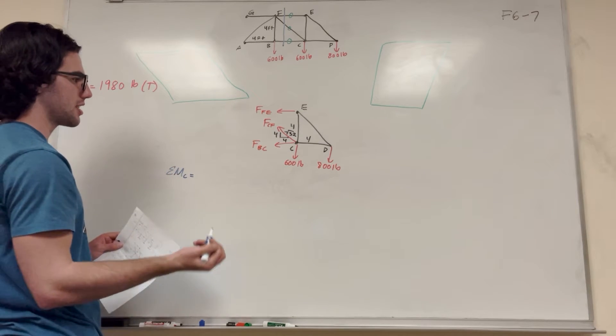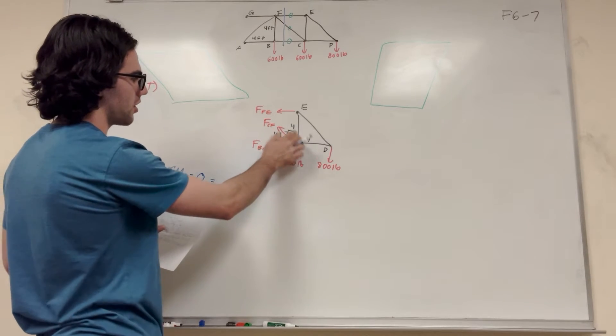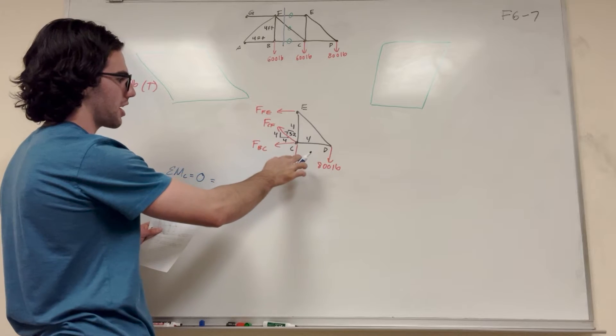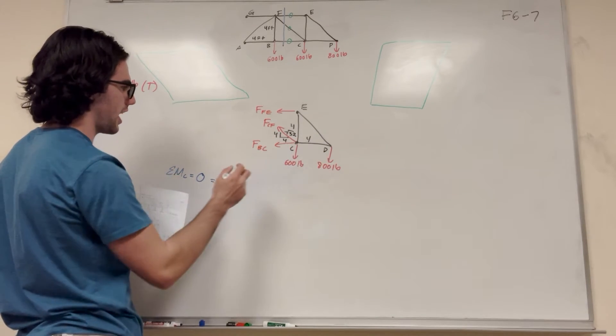We know that the sum of the moments at C is going to be equal to 0. And then, of course, let's add them up. So at C, these are all not going to be concerning ourselves because they're on C. So then we have D.